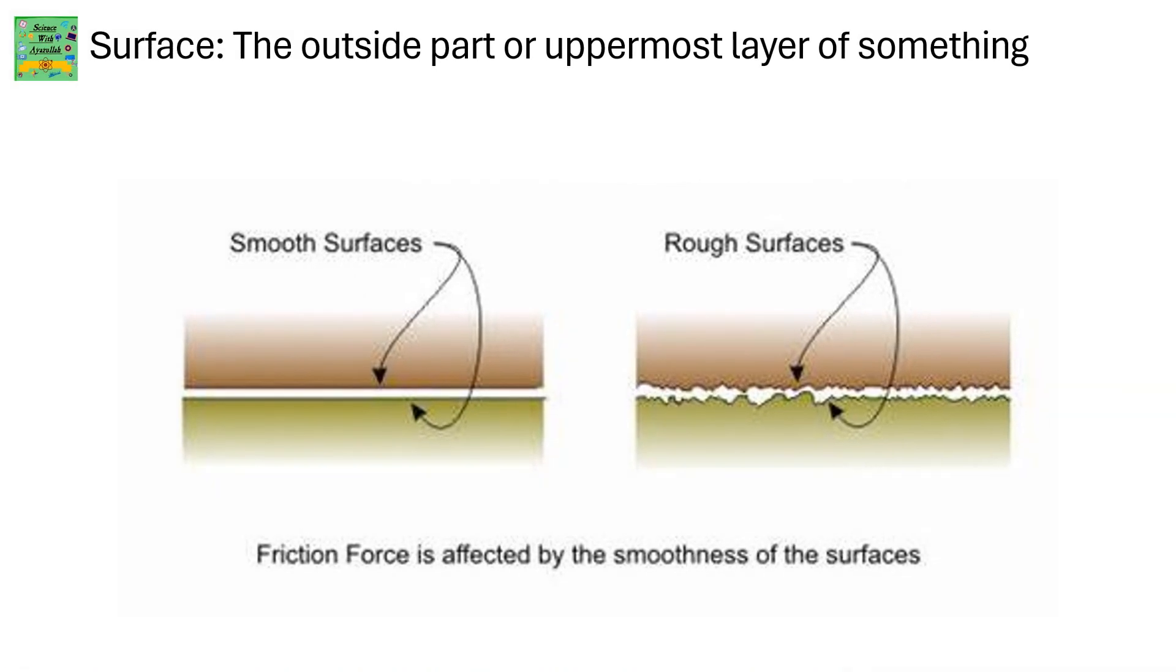Surface: The outside part or uppermost layer of something. Friction force is affected by the smoothness of the surfaces.